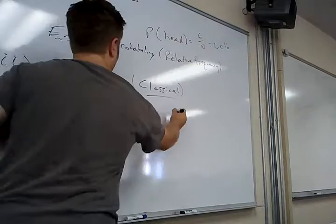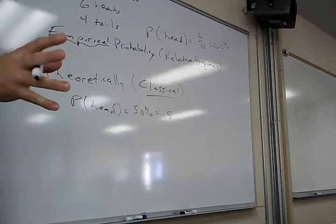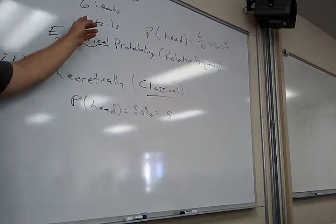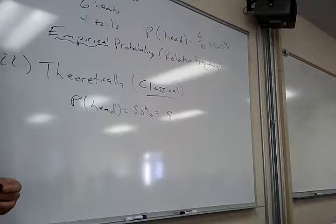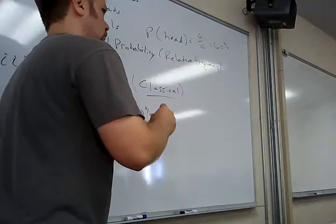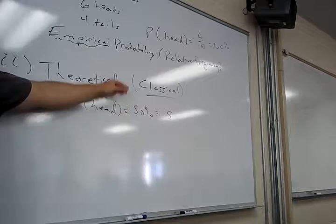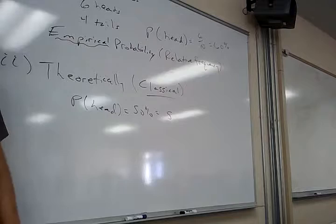When you're doing homework in this section, you can leave answers as a decimal or percentage. Show me some work — show me a fraction if you have to divide something. Why are these two different? Theoretically you only have two options for a coin — heads and tails — and they're equally likely. Theoretically is based on a perfect world where they're equally likely.